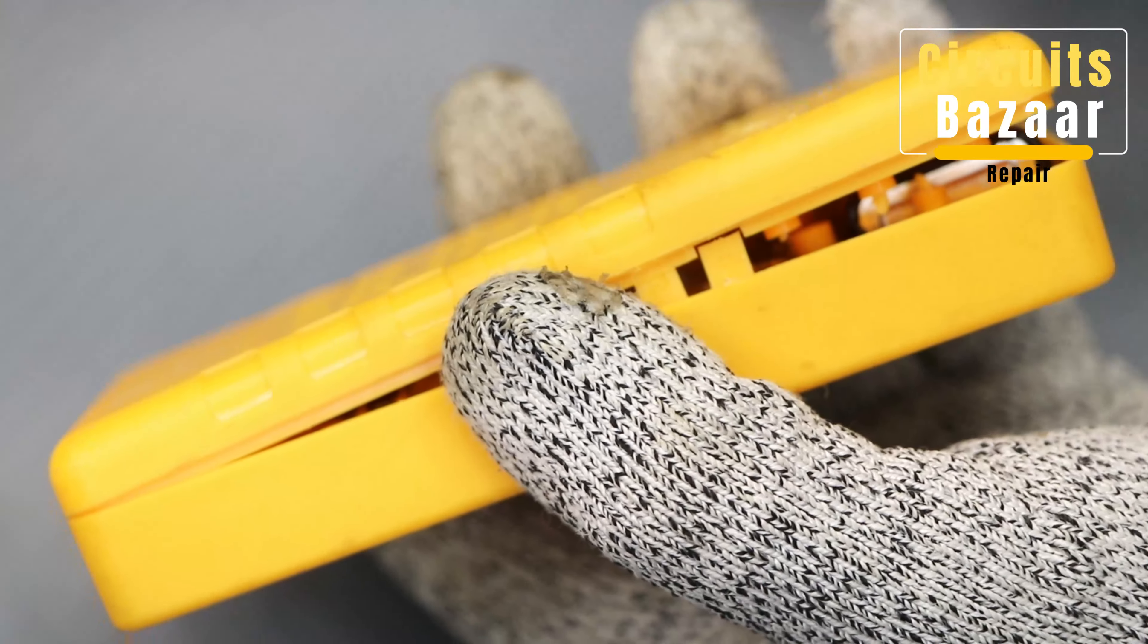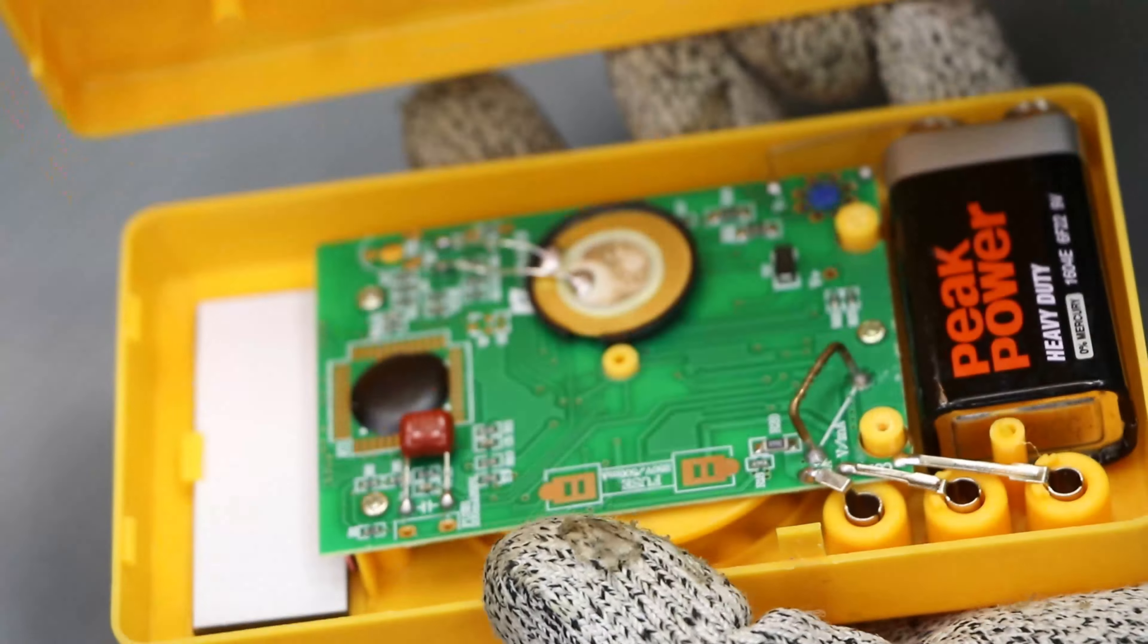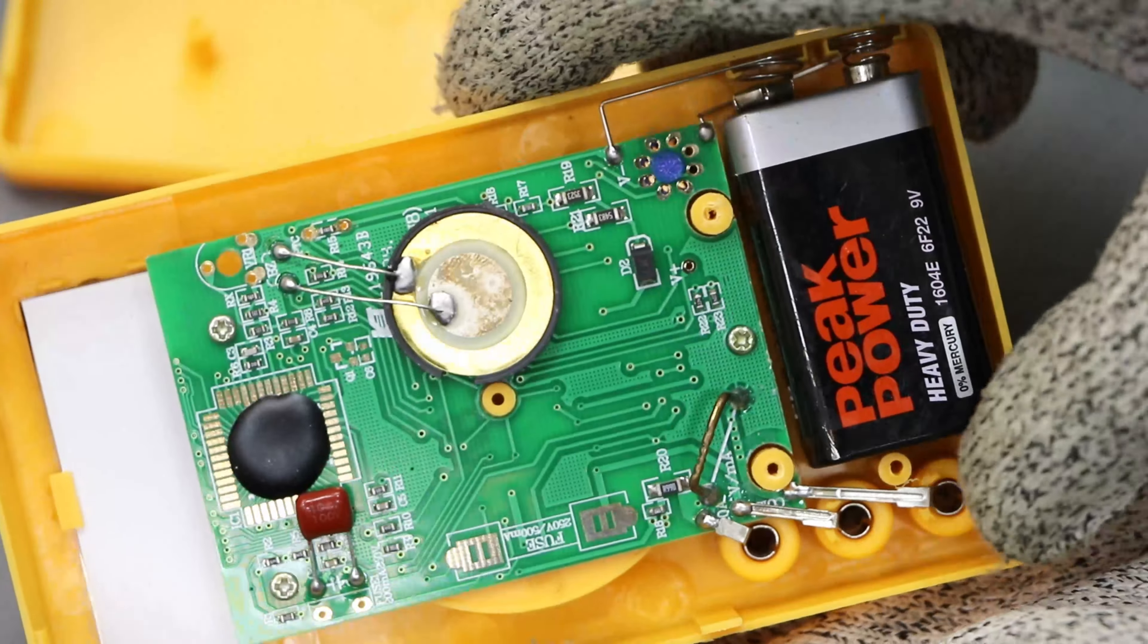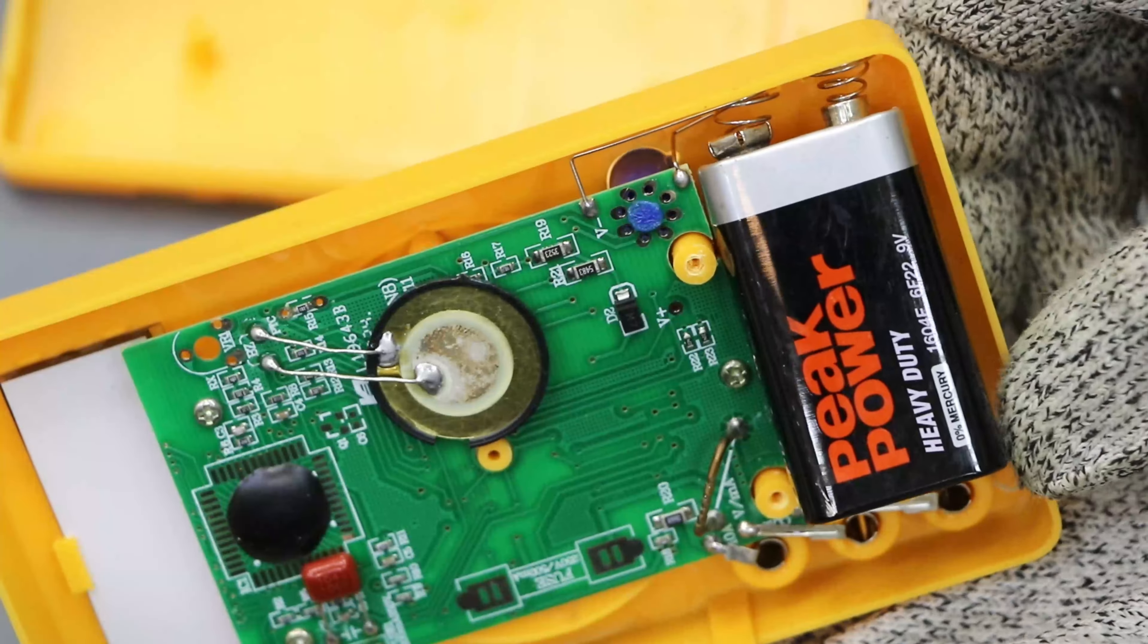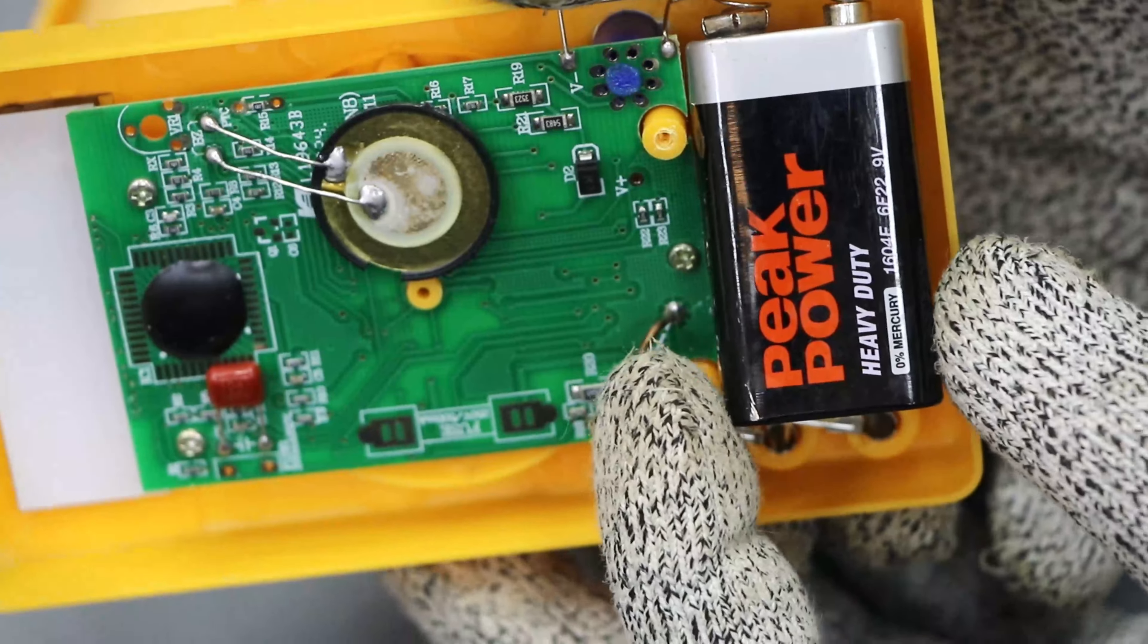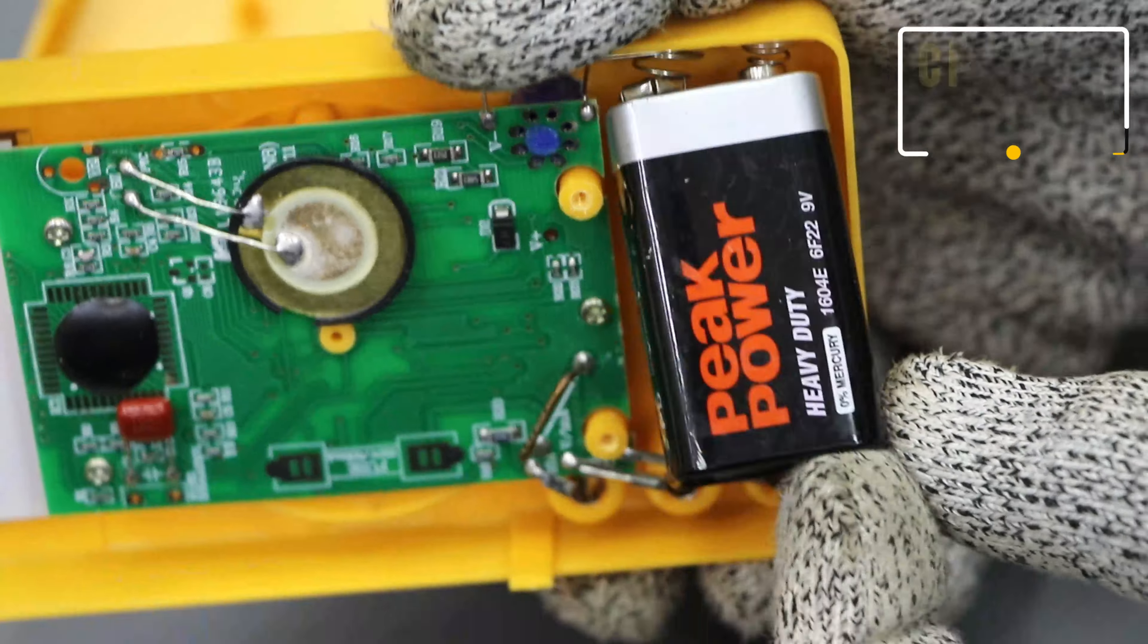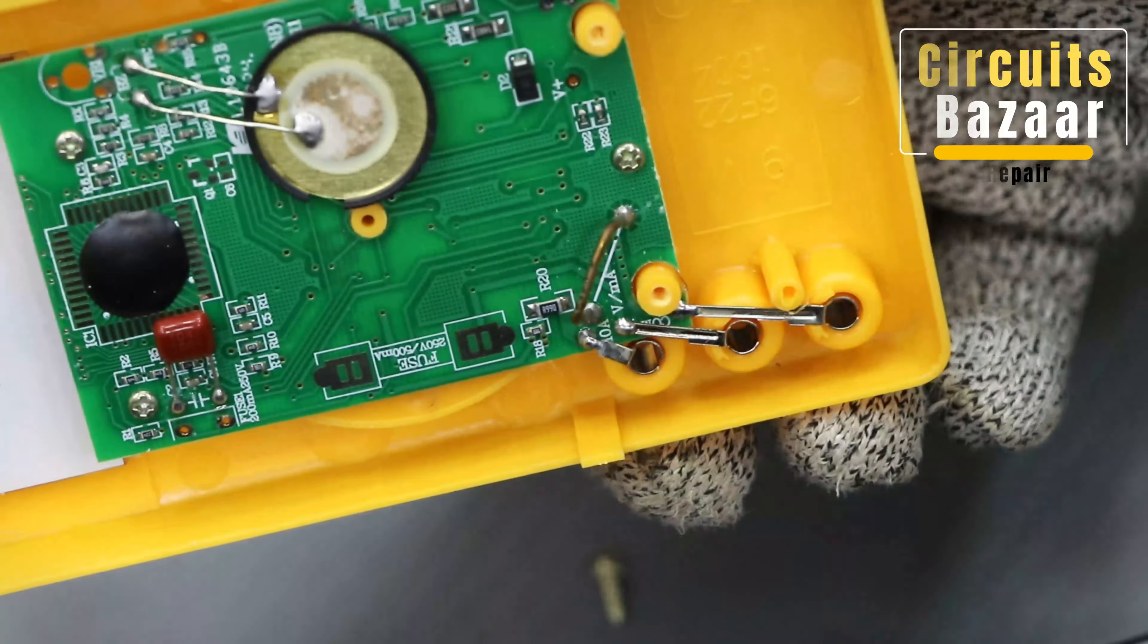And this is how it looks from inside. You can see this is the battery, this is a 9 volt battery. It's very economic, you can buy this battery from the market in just 10 to 15 rupees only. So the brand doesn't matter. It's Peak Power, you can use some other brand as well. So I am using this one.